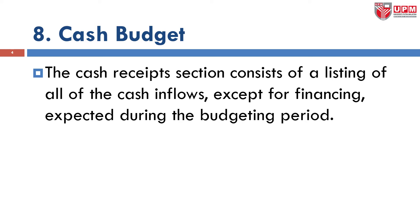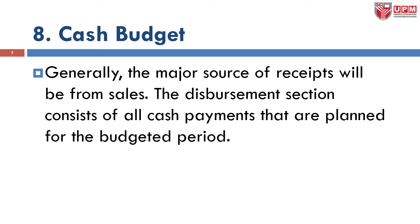The cash receipts section consists of a listing of all the cash inflow — the money that comes into the company, whether it comes from sales, sometimes from funders, and so on, except for financing, expected during the budgeting period. Generally, the major source of receipts will be from sales. If you can sell more products, that means more income for the company, and that's where the cash in hand will rise.